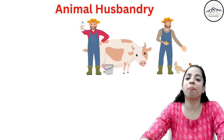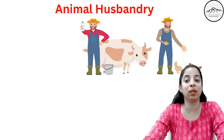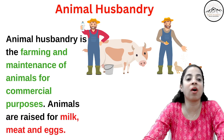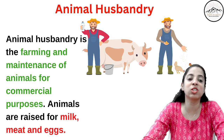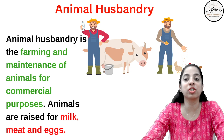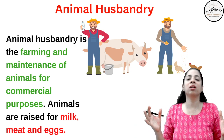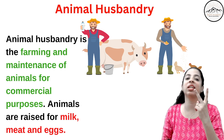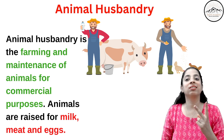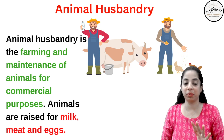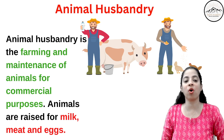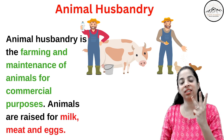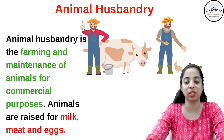In this part we will be talking about animal husbandry. Animal husbandry is the farming and maintenance of animals for commercial purposes. Animals are raised for three main purposes: milk, meat, and eggs.